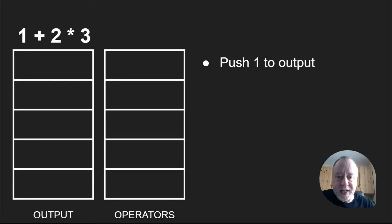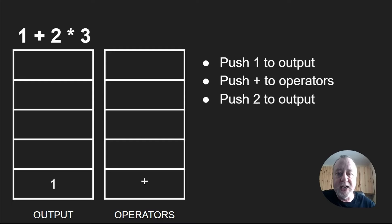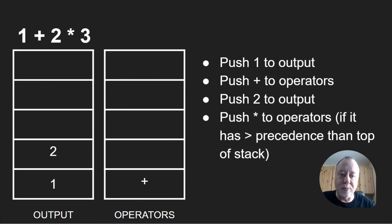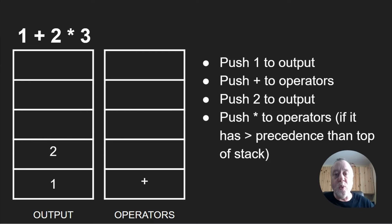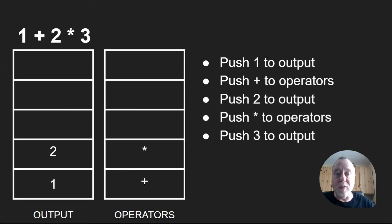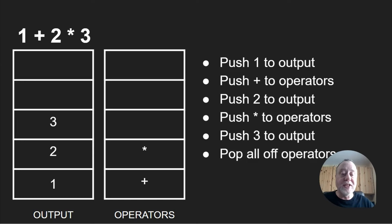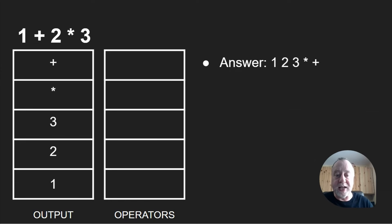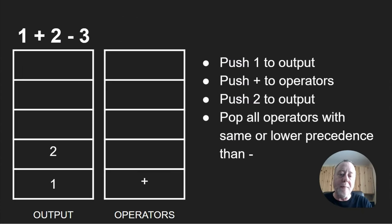Let's try another one: one plus two times three. Push the one onto the output stack, push the plus onto the operator stack, push the two onto the output stack. Now we come to the multiply sign — you push multiply to the operators if it has greater precedence than the top operator on the stack. Multiply has greater precedence than plus, so it goes on the stack. Then we put the three onto the output stack. At the end, we pop everything off: multiply first, then plus. That gives us one two three multiply plus, which is absolutely correct.